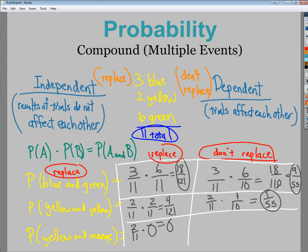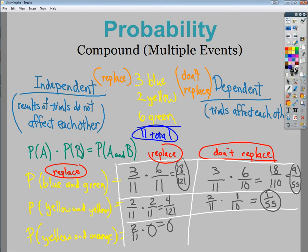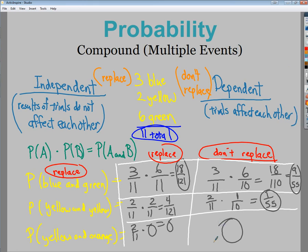And finally, there's still no orange one in there, no matter if I don't replace or not. So there's a zero probability that I can get that yellow and orange thing to happen. So that's compound probability or probability of multiple events. If you have multiple events, you need to multiply. If you are replacing your item after your original turn, it doesn't affect the total number. If you're not replacing it, you have to make your adjustments.